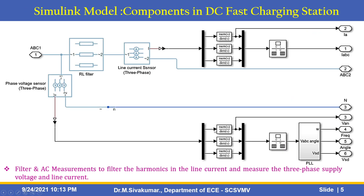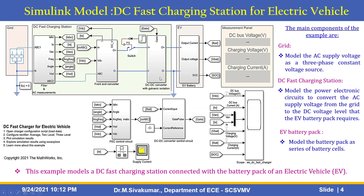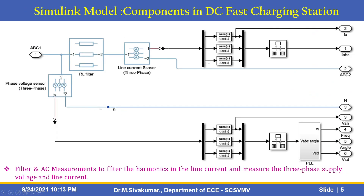These are the components in the DC fast charging station. The DC fast charging station block contains a filter and AC measurement unit, a front-end converter, and a DC-to-DC converter with galvanic isolation. The first part of this Simulink model subsystem has a filter and AC measurements to filter the harmonics in the line current and measure the three-phase supply voltage and the line current, using a line current sensor and RL filters.